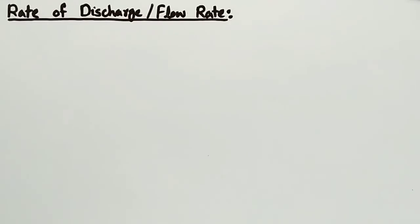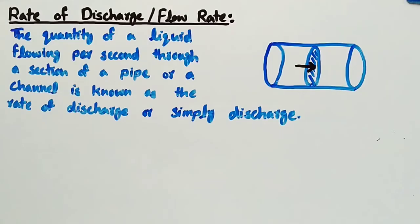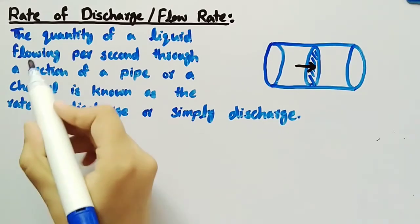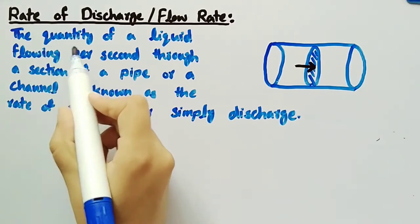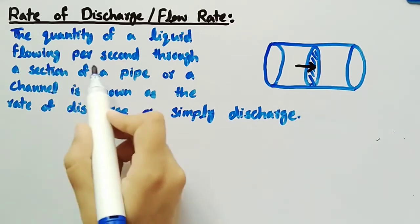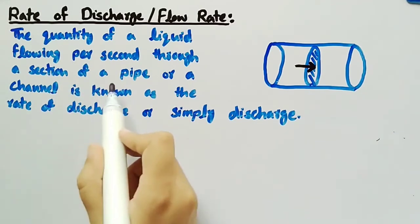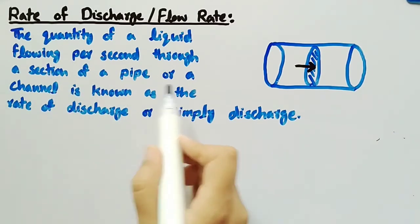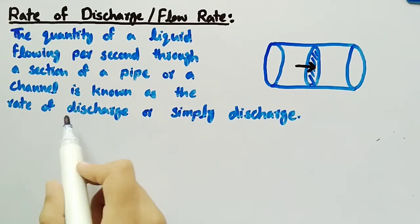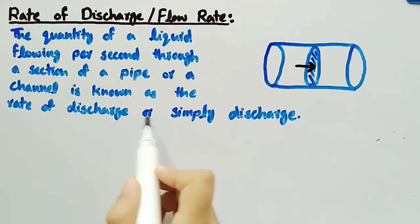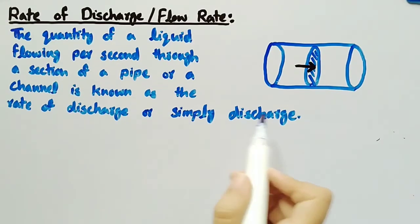In this video, we will discuss what is rate of discharge or flow rate. The quantity of a liquid flowing per second through a section of a pipe or a channel is known as the rate of discharge or simply discharge.